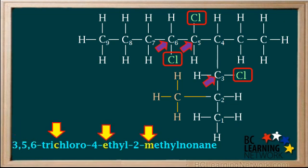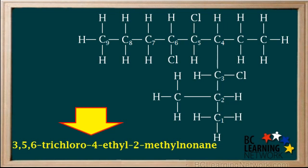We can check to see that the names of the groups — not counting the prefix tri — are in alphabetical order. So the final name for this alkane is 3,5,6-trichloro-4-ethyl-2-methylnonane. It would be a good idea now for you to go through these rules and justify to yourself that this is the correct IUPAC name for this compound. Thank you very much.